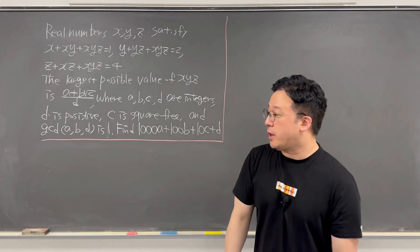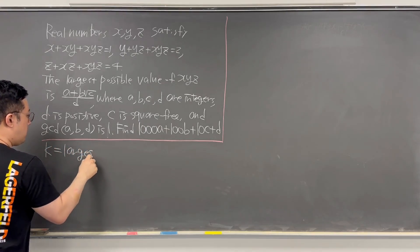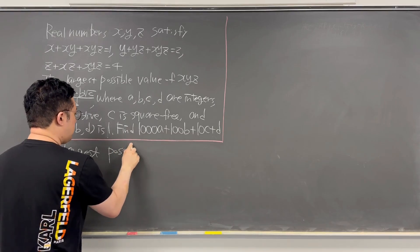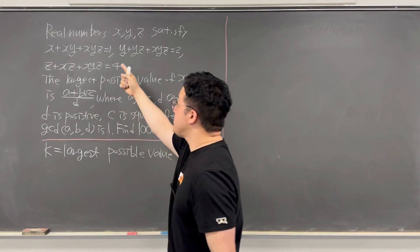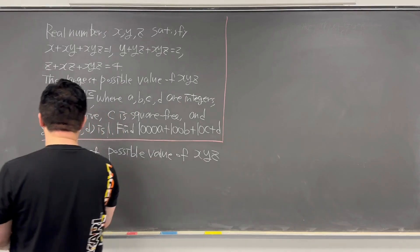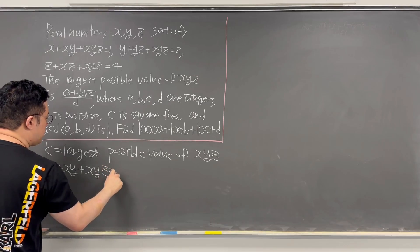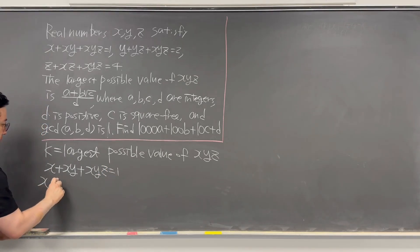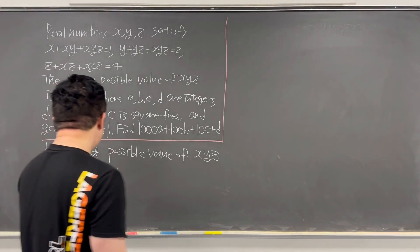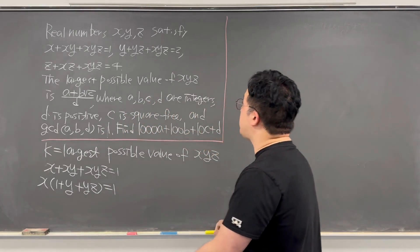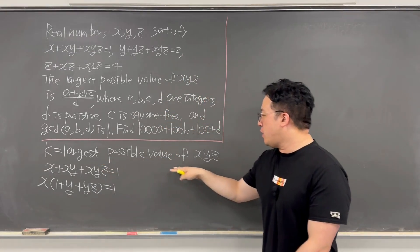For this question, just to make it easier to work with, I'll be calling K the largest possible value of xyz. Then let's start with the first condition: x + xy + xyz = 1. We already called xyz = K.